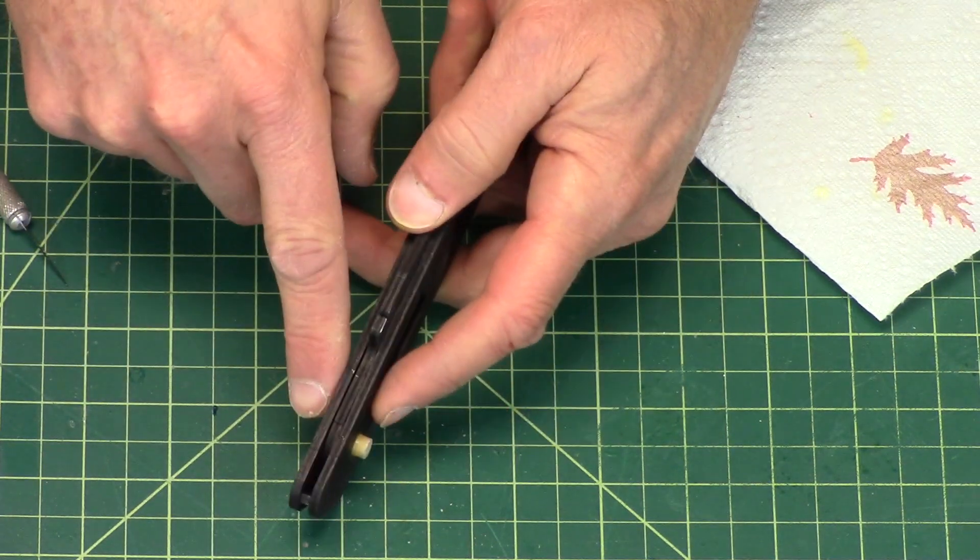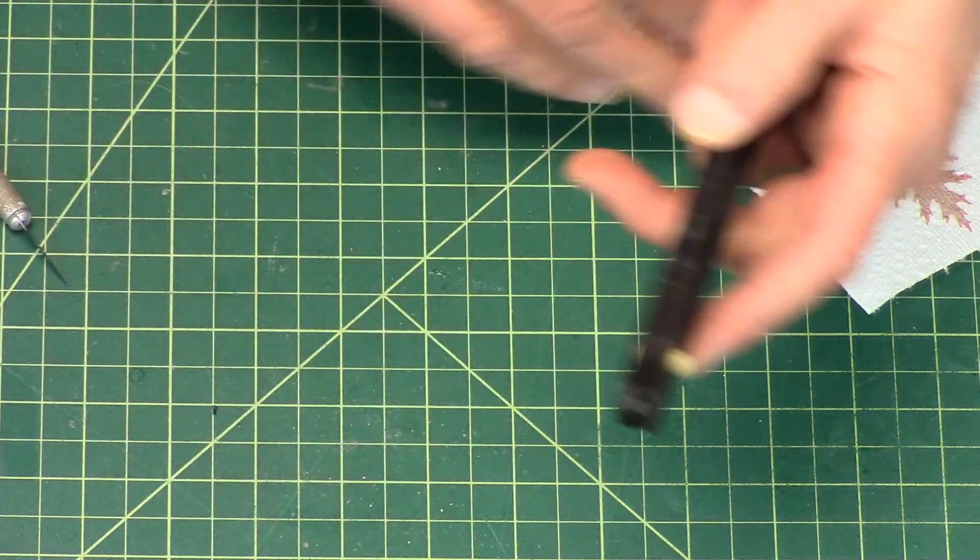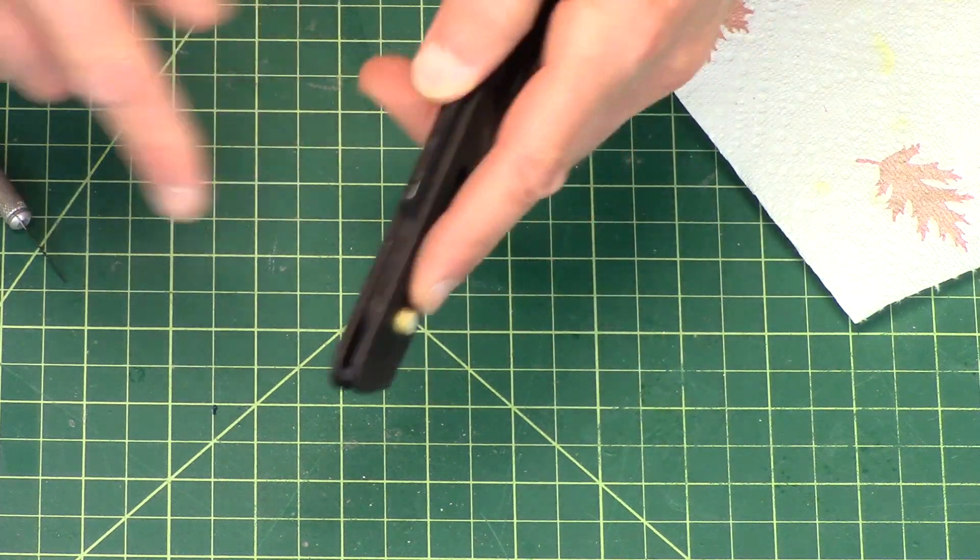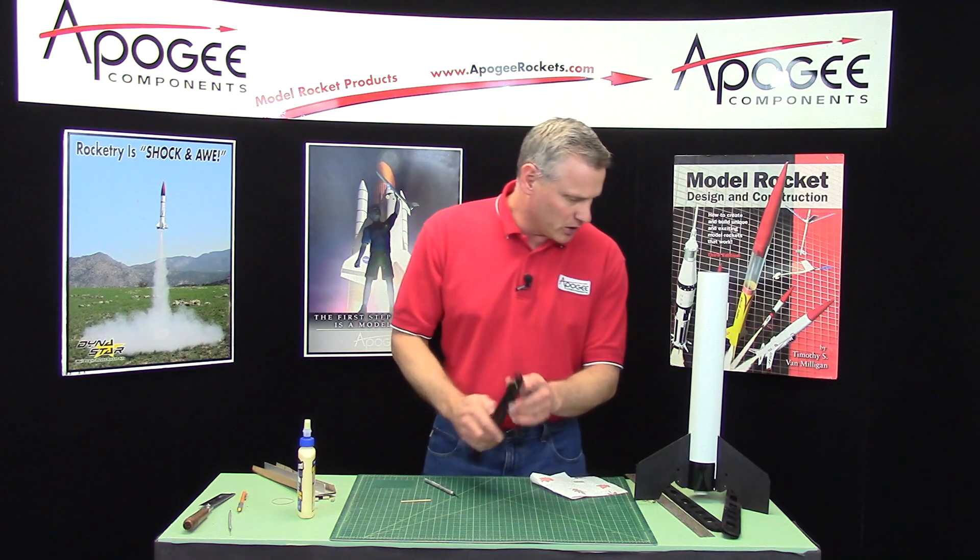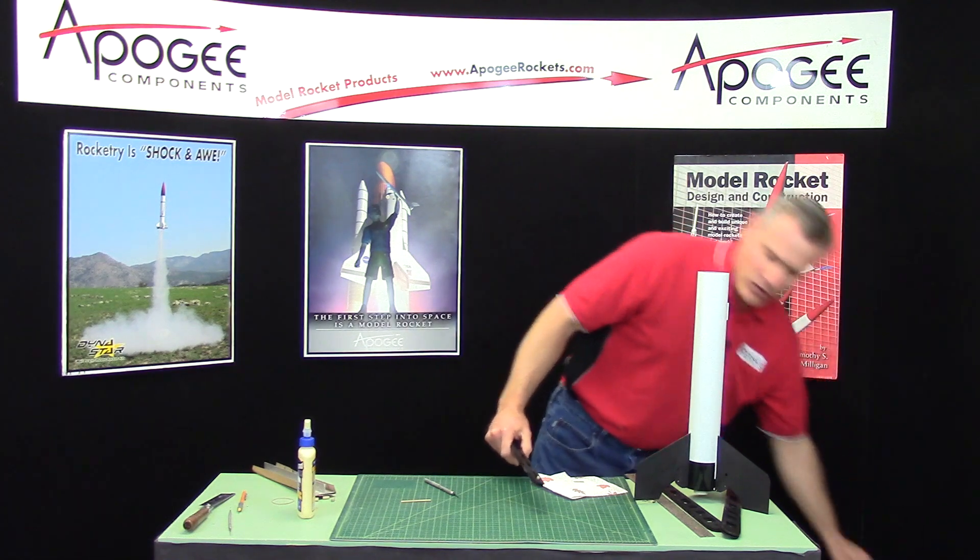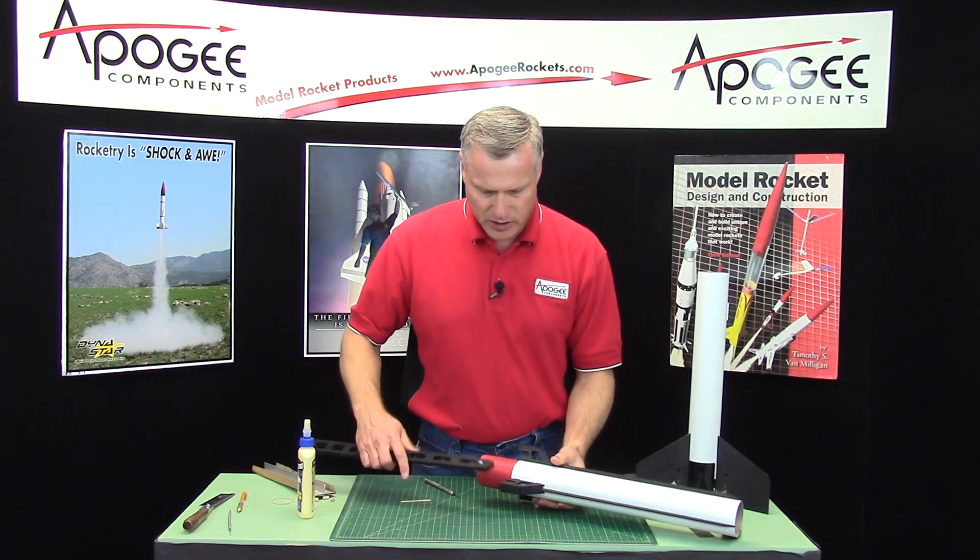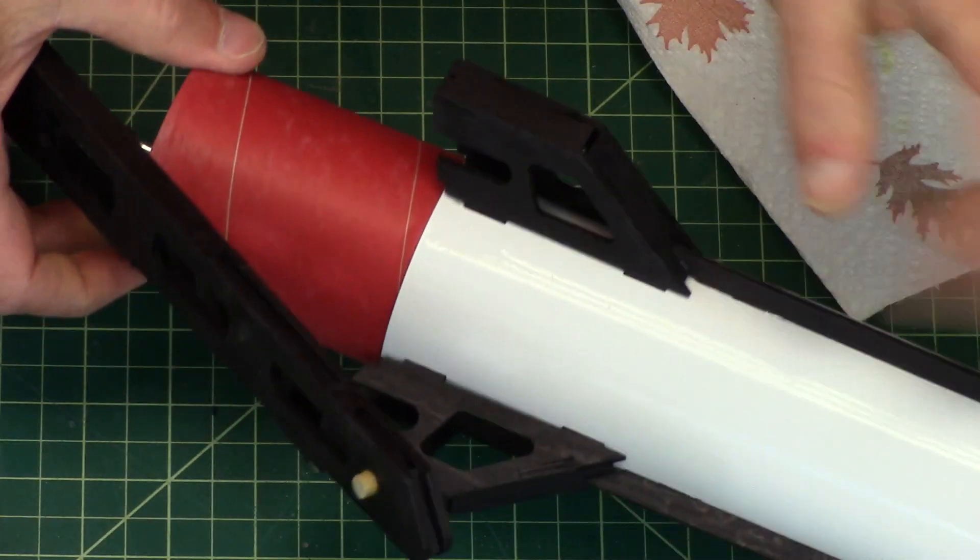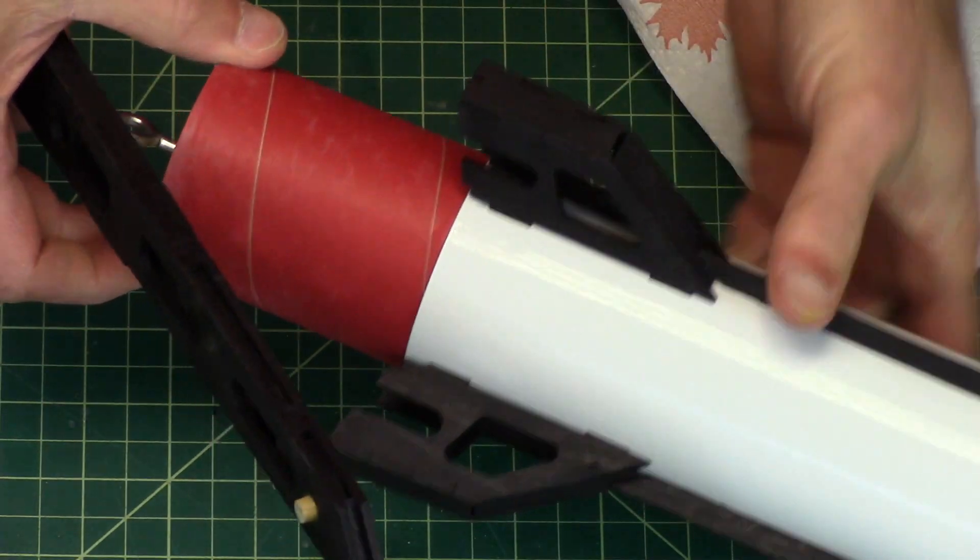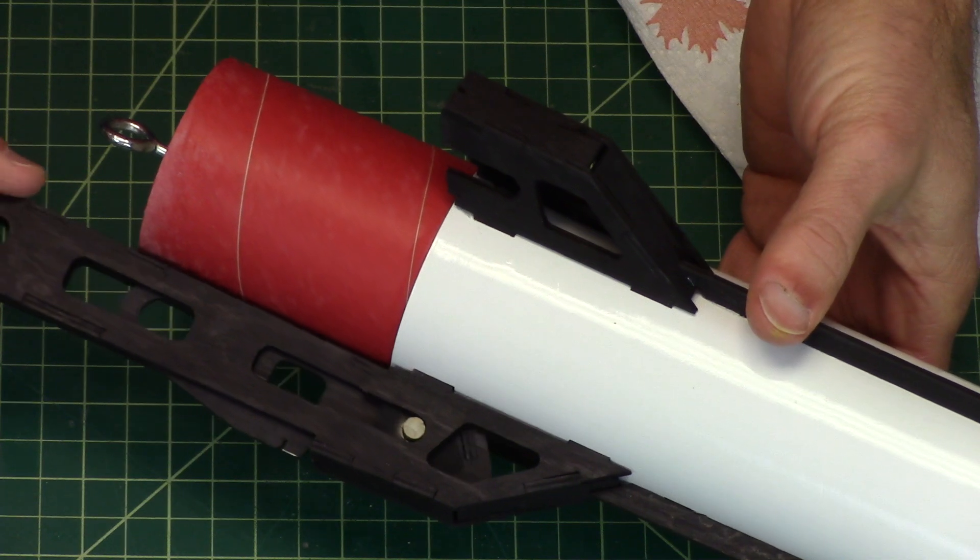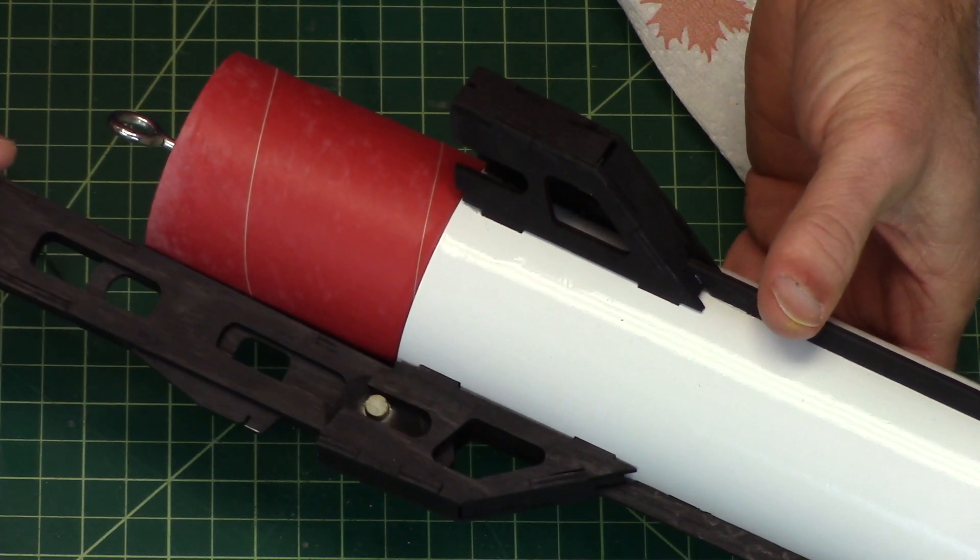Now you can see it overhangs the edge quite a bit. You can sand that off and I think I will, or you could leave it like that. If you leave it like that, you'll notice on the pockets right here there's this cutout, and that cutout is for that pin in case that pin sticks up too high.